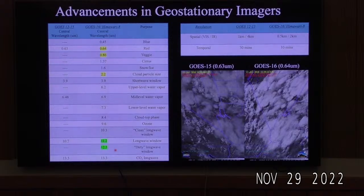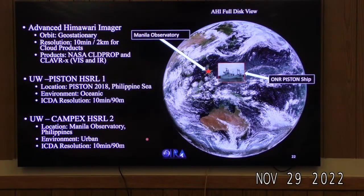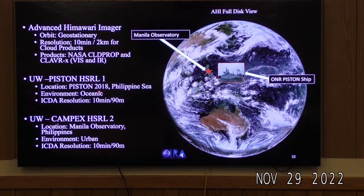In this study, we used AHI to validate the NASA CloudProperty and CLAVRX visible and infrared retrievals. We were very fortunate to get the UW HSRL on the Office of Naval Research Piston ship campaign in 2018, which provided ocean-based HSRL measurements. We also had the UW CAMP2X HSRL located over an urban environment at the Manila Observatory in the Philippines.